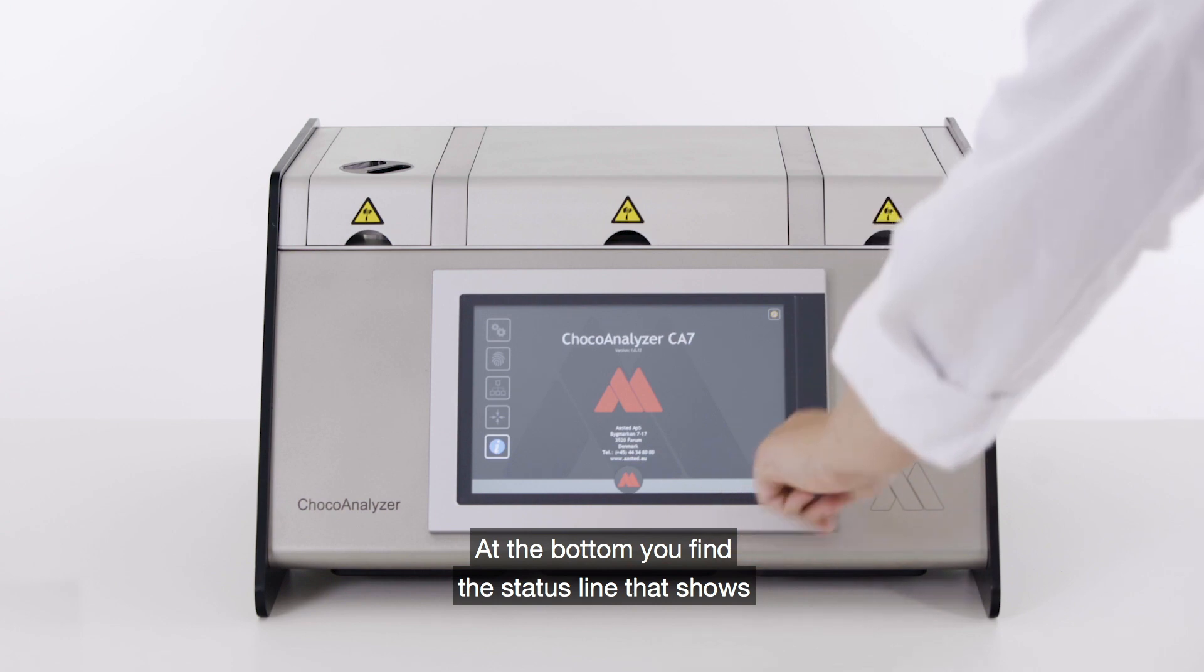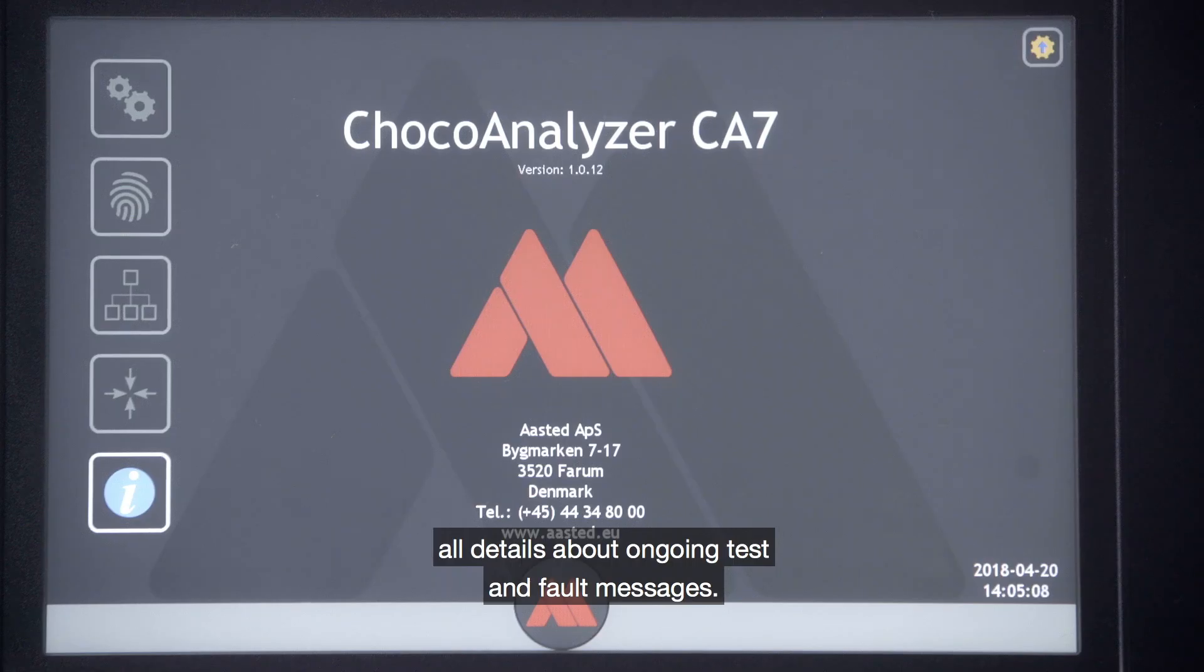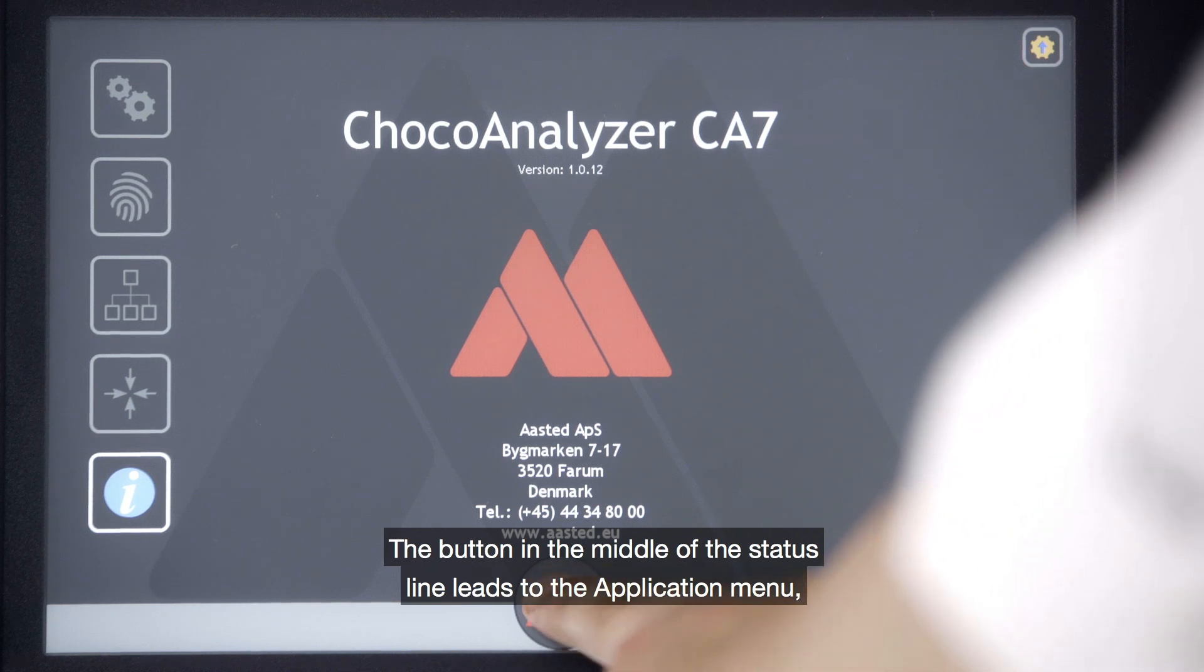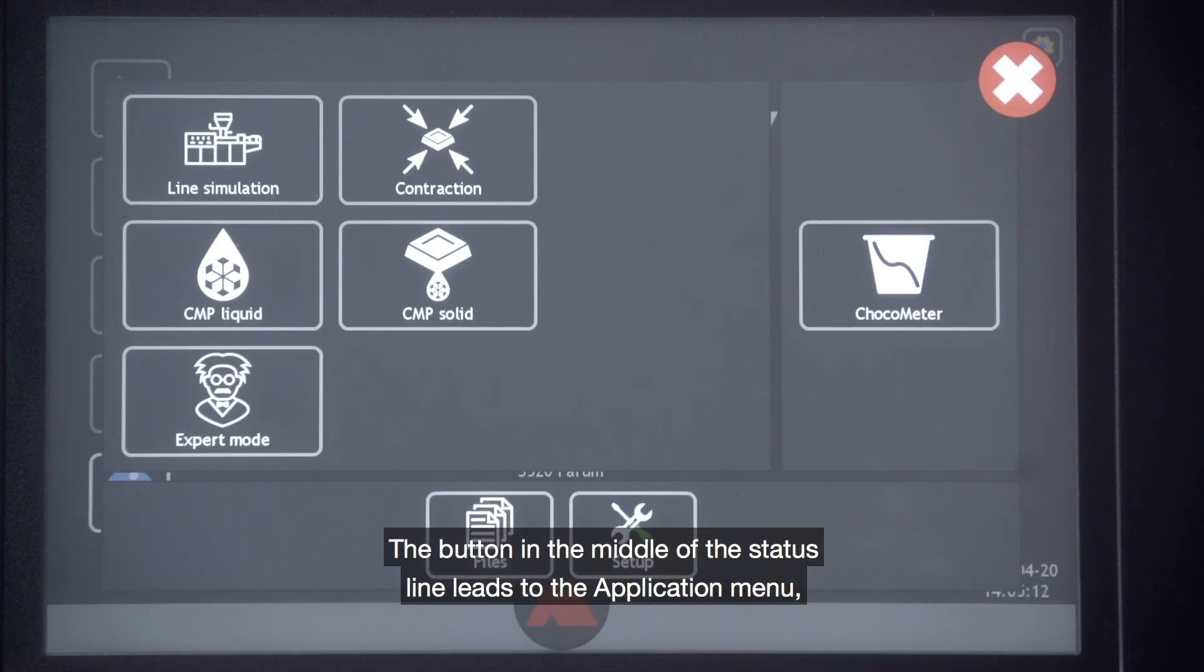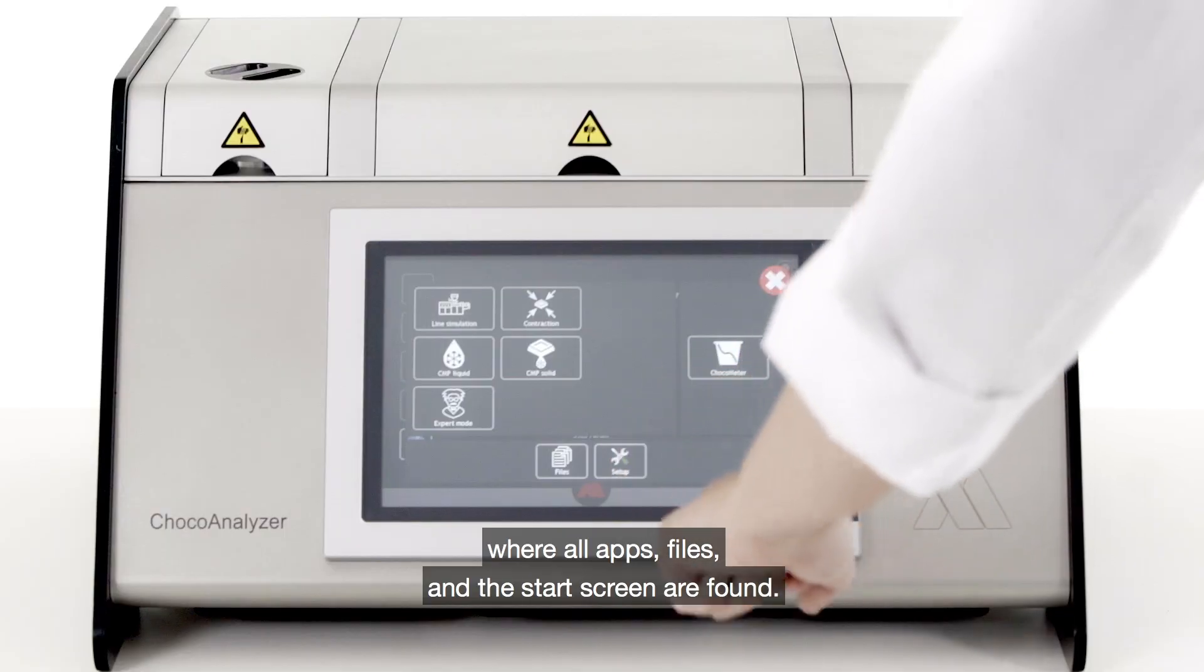At the bottom you find the status line that shows all details about ongoing test and fault messages. The button in the middle of the status line leads to the application menu where all apps, files and start screen is found.